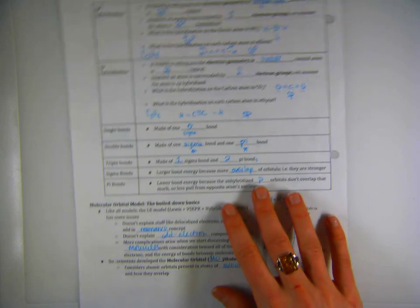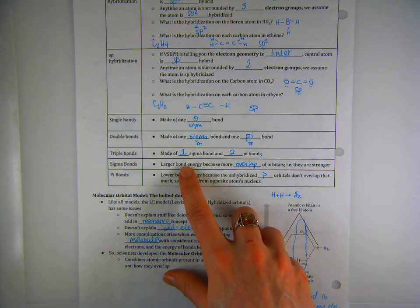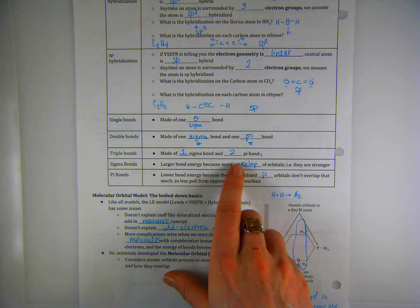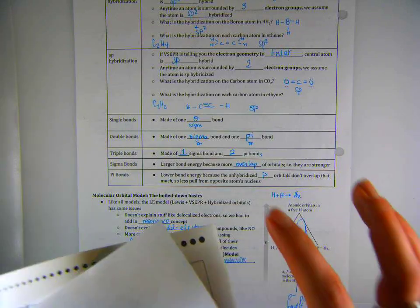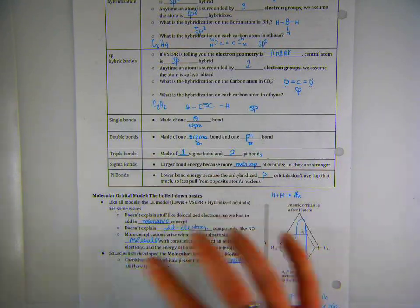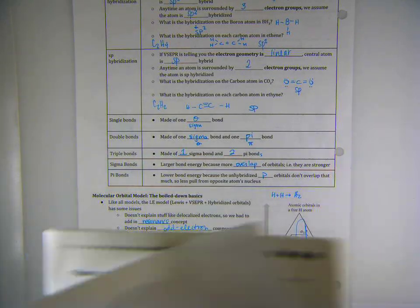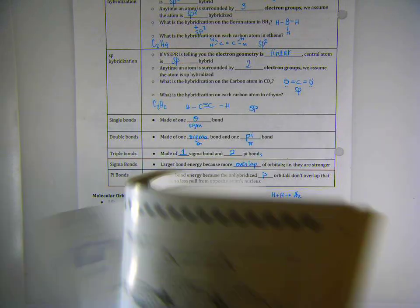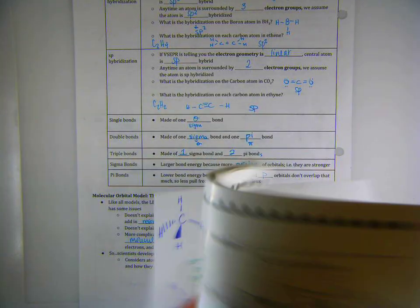In the notes, it says that sigma bonds have a larger bond energy. You could just tell in the way those models were. There was more overlap. The molecules were closer together in that region of the sigma bond. So that makes them a little bit more stable. Pi bonds are lower energy. They're less stable, I guess you could say. And you can see how little overlap there was in our molecular models.